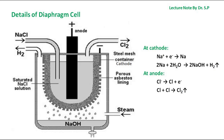The sodium ions pass through the asbestos and change to sodium atoms at the cathode. These react with steam to form caustic soda solution, which is collected at the bottom of the tank and drawn out from time to time and concentrated. Steam is passed from the bottom and the prepared NaOH is collected from the bottom, as shown in the figure.